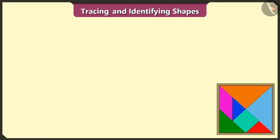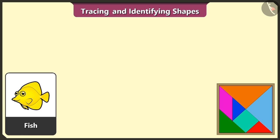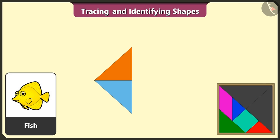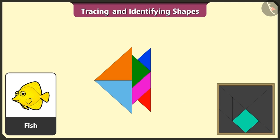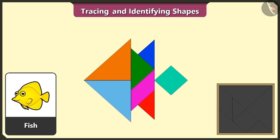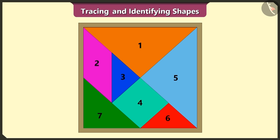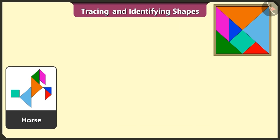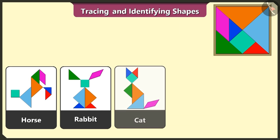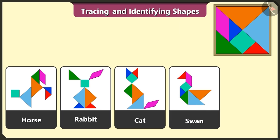This is a fish. Let's try and create a fish using two triangles, one quadrilateral, and one triangle, two more triangles, and one square. And we have created a fish! We have finally created a horse, rabbit, cat, swan, and a fish using the seven shapes of the tangram.